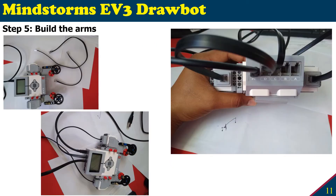The last step to build the arm is to connect the motors to the brick using cables. I have both short and long cables. The USB port for the PC is on one side, and the brick has four other ports: A, B, C, D. I connected the two motors to ports C and D. You can use any two ports, but remember which ports you connect because you will reference them by name when writing the program.